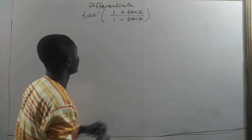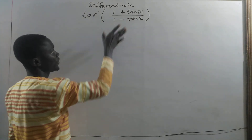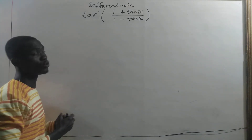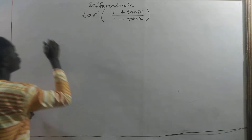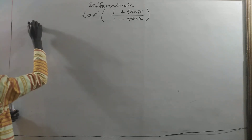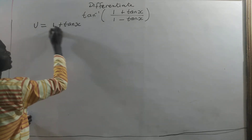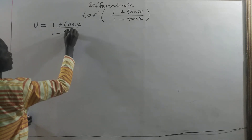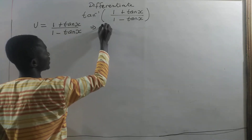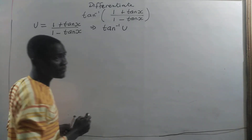For this one, we have the inverse tangent containing this function, so this is a composite function or a function of a function. We are going to use the chain rule. We will take u to be equal to (1 plus tangent of x) divided by (1 minus tangent of x). This implies that the original question will become the inverse tangent of u.